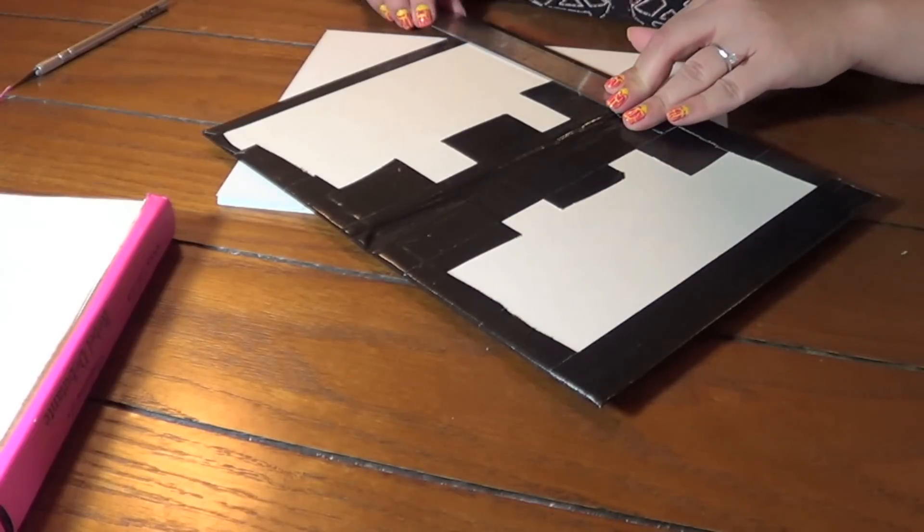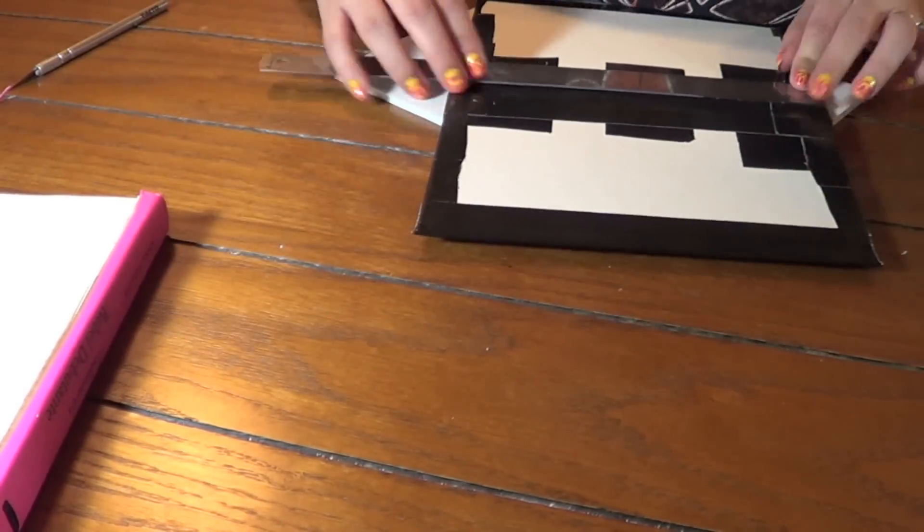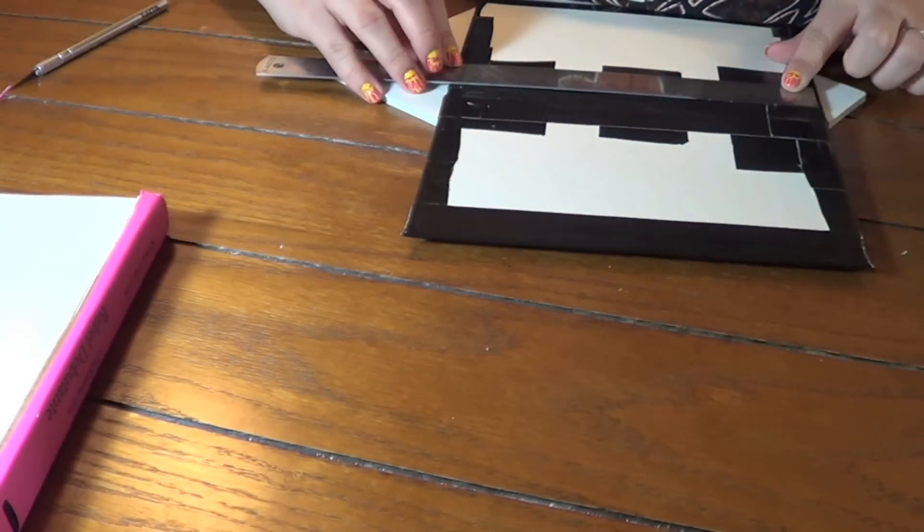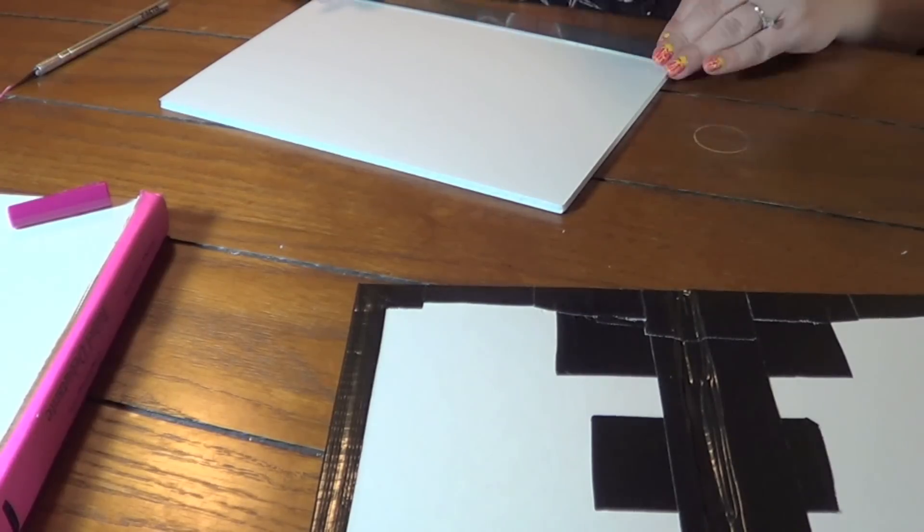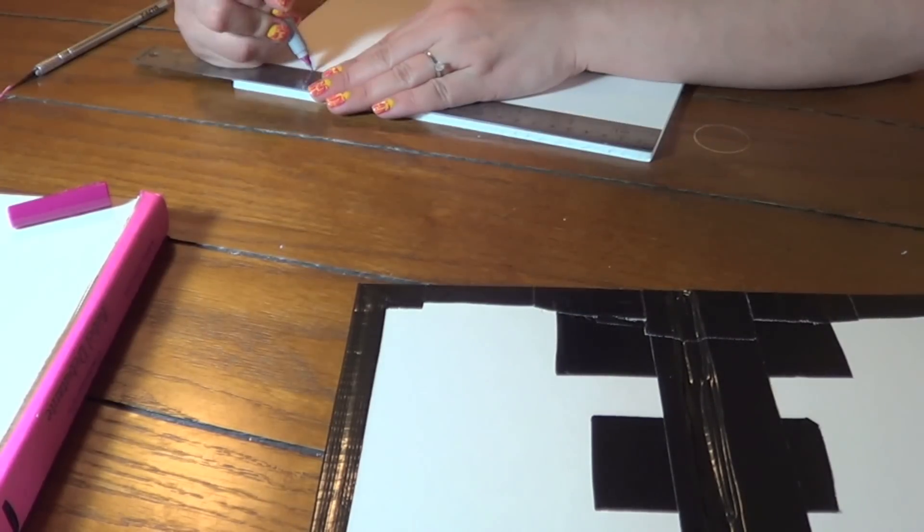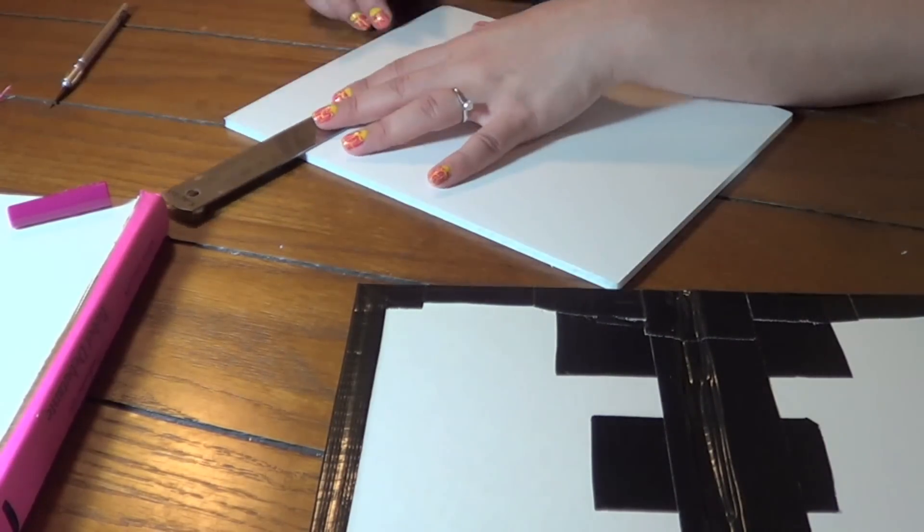So then you want to measure the inside of your bookcase or the inside of the book flap, and then measure the foam board and try and get them the same size.